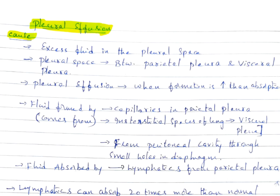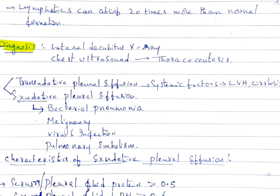Plural effusion is excess fluid in the pleural space between parietal pleura and visceral pleura. Pleural effusion forms when formation exceeds absorption. Fluid is formed from capillaries in parietal pleura and from interstitial spaces of the lung through visceral pleura. It also comes from peritoneal cavity through small holes in the diaphragm. Fluid is absorbed by lymphatics from parietal pleura. Lymphatics can absorb 20 times more than normal formation.